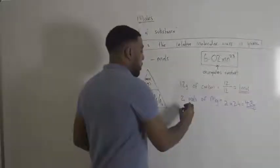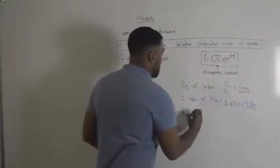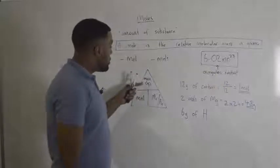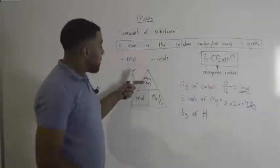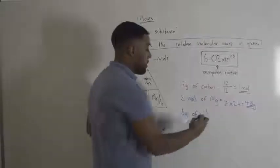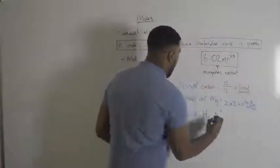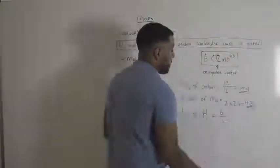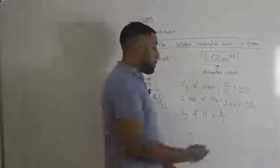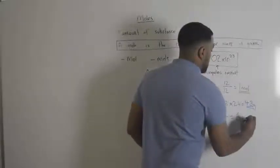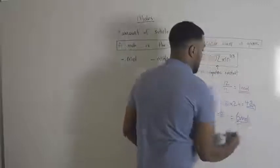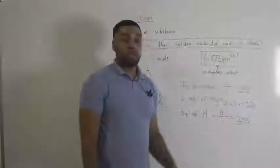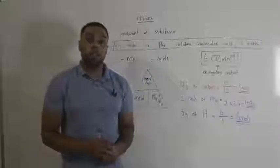We'll do one more. What about if I had six grams of hydrogen? Again, using my triangle, I know that I've got six grams. That's the mass. So it would be six divided by the relative atomic mass of hydrogen, which is just one. Six divided by one gives us six moles. So if I had six grams of hydrogen, the amount that I have is just six moles. Okay guys, thanks for tuning in. Stay in touch with another video.